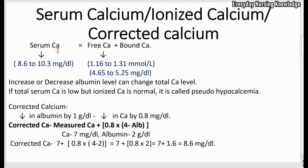Serum calcium is the type of blood calcium test doctors order most often. The normal serum calcium level is 8.6 to 10.3 milligrams per deciliter. The normal value of free calcium or ionized calcium is 1.16 to 1.31 millimoles per liter, or 4.65 to 5.25 milligrams per deciliter. So serum calcium measures free calcium plus bound calcium.